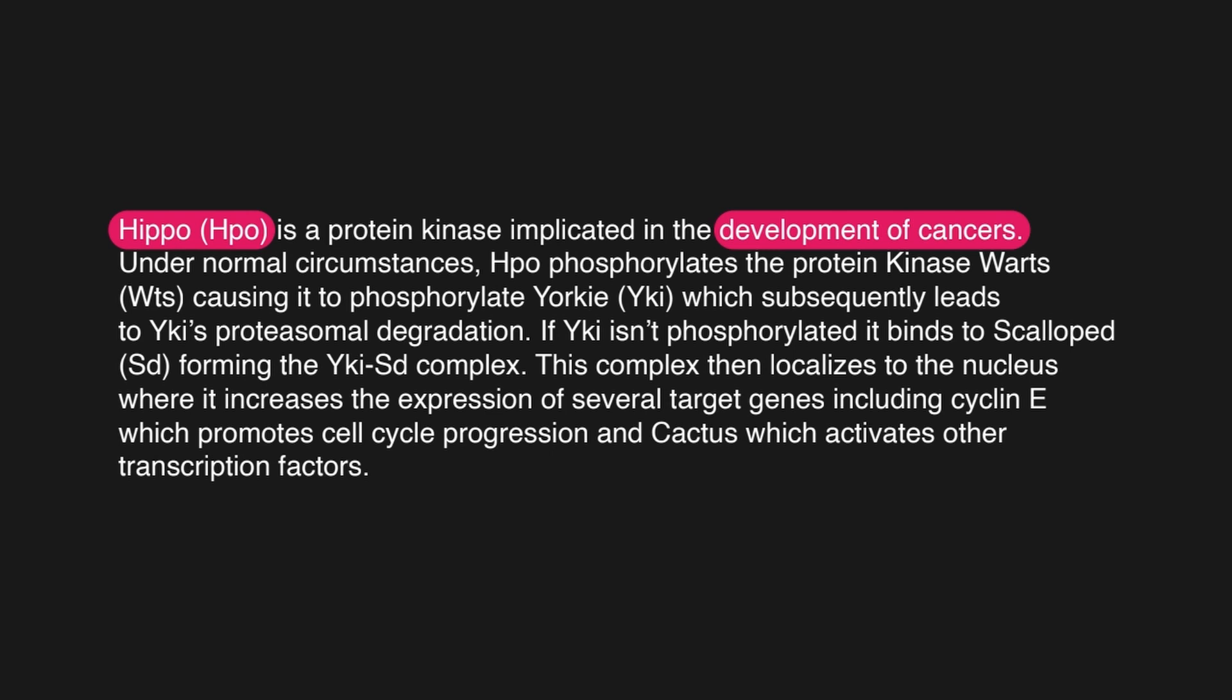For example, we have this pathway here. It says that hippo is a protein kinase implicated in the development of cancers. Under normal circumstances, hippo phosphorylates the protein kinase warts, causing it to phosphorylate Yorkie, which subsequently leads to Yorkie's proteasomal degradation. If Yorkie isn't phosphorylated, it binds to scallop, forming the Yorkie-scallop complex. This complex then localizes to the nucleus, where it increases the expression of several target genes, including cyclin E, which promotes cell cycle progression in cactus, which activates other transcription factors.